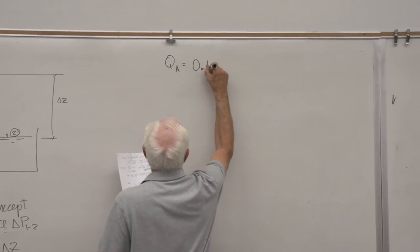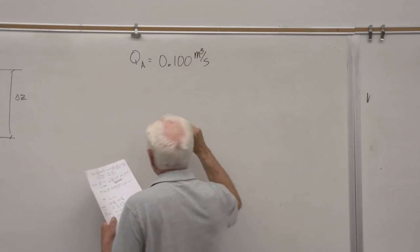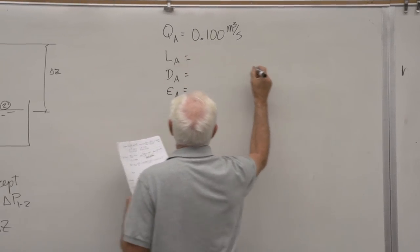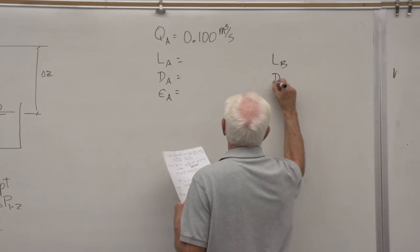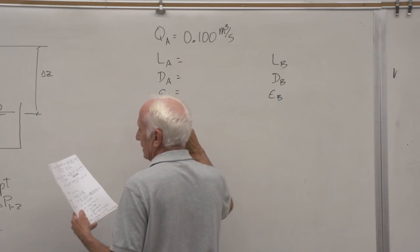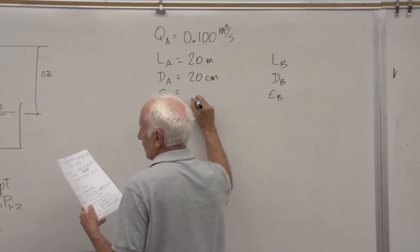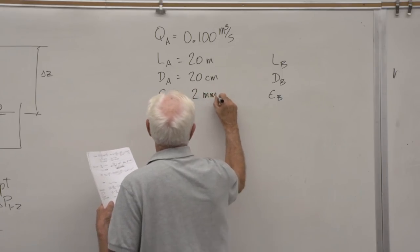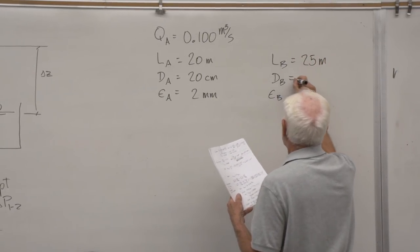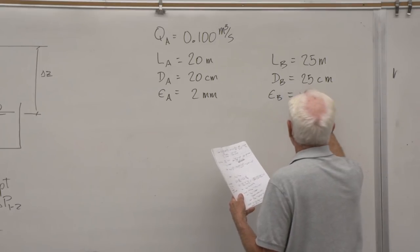QA is given as 0.100 cubic meters per second. Pipe A: length LA equals 20 meters, diameter DA equals 20 centimeters, roughness epsilon A equals 2 millimeters. Pipe B: length LB equals 25 meters, diameter DB equals 25 centimeters, roughness epsilon B equals 2.5 millimeters.